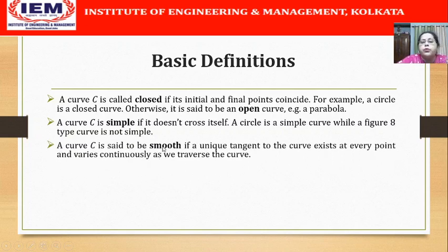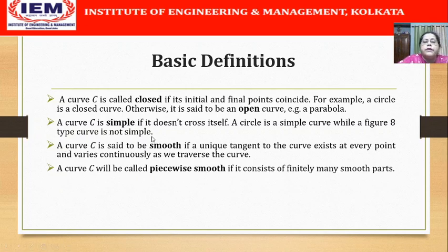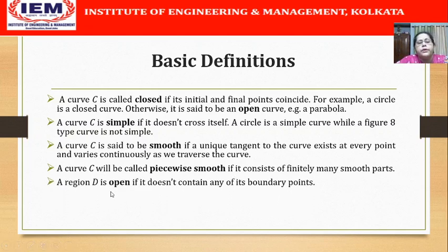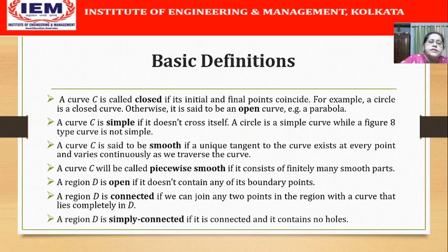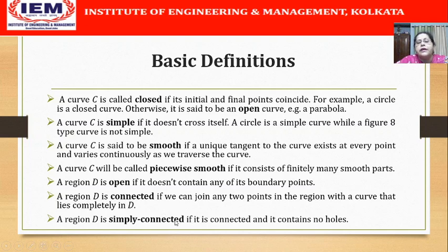A curve C is said to be smooth if a unique tangent to the curve exists at every point and varies continuously as we traverse the curve. A curve C will be called piecewise smooth if it consists of finitely many smooth parts. A region D is open if it does not contain any of its boundary points. A region D is said to be connected if we can join any two points in the region with a curve that lies completely in D. And lastly, a region D is said to be simply connected if it is connected and contains no holes — that means a closed curve lying in the region can be contracted to a point without passing out of the region.